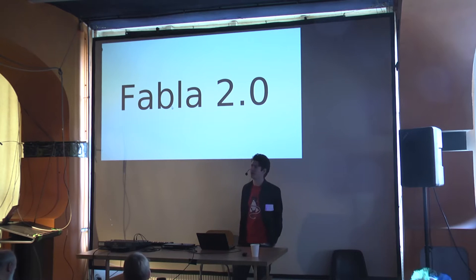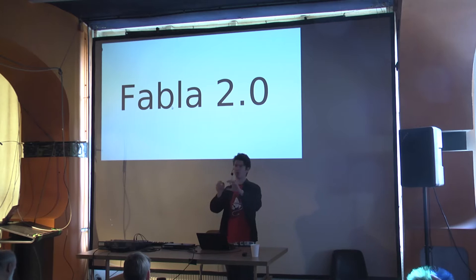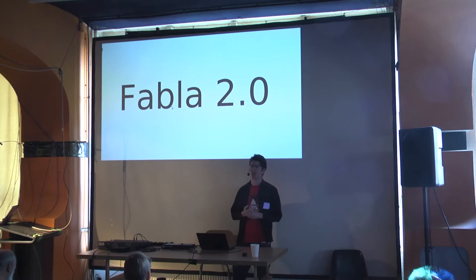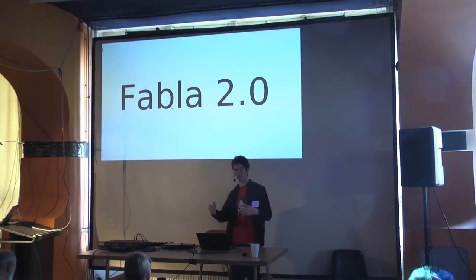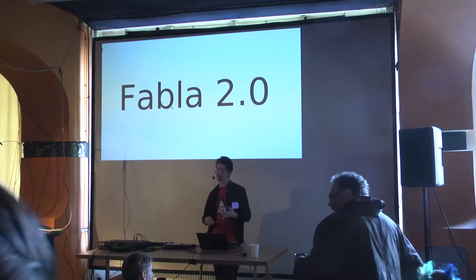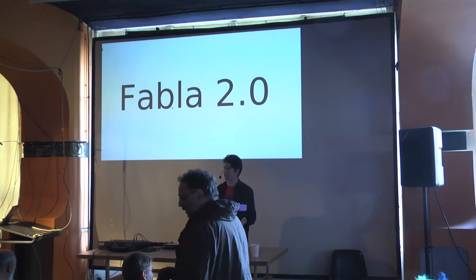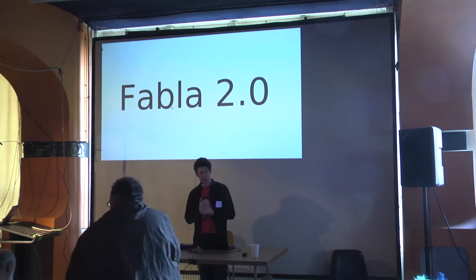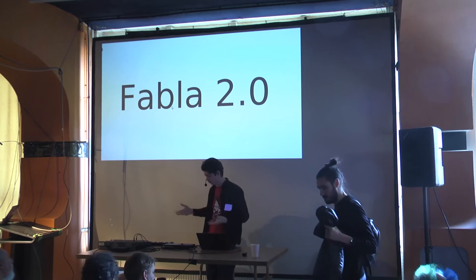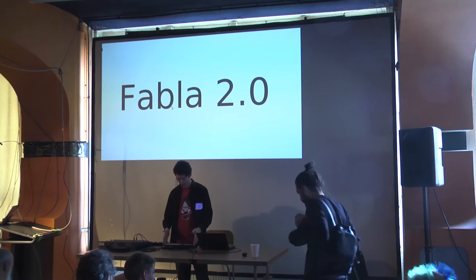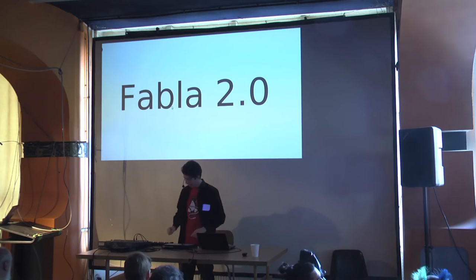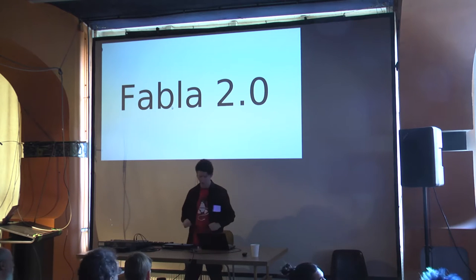What I mean by drum sampler is we're not talking melodic sampling — pitching one audio sample up and down to create an instrument. Instead, we're talking about having a collection of samples and triggering them to form drum loops. Each sample is more like a specific drum hit, like a kick drum or a hi-hat. That's what Fabla 2.0 is aimed for, particularly for a live performance scenario. On the table in front of me I have a Machine Micro — a hardware drum sampler — and a little keyboard that we might use towards the end of the workshop.